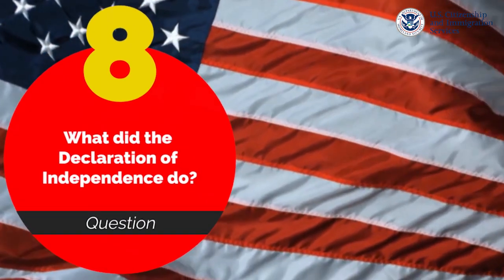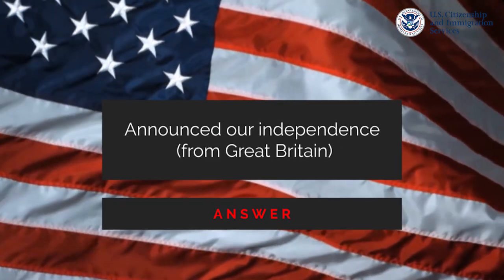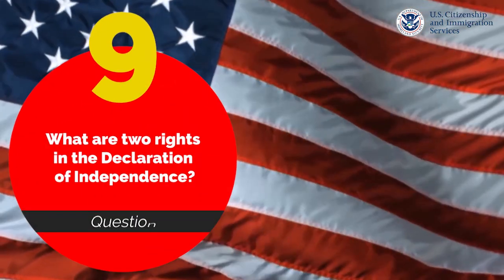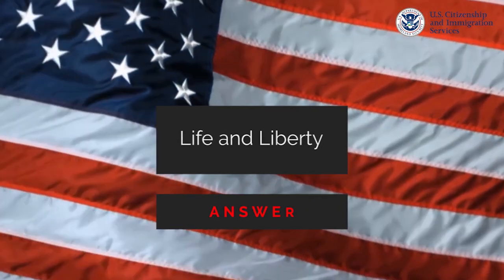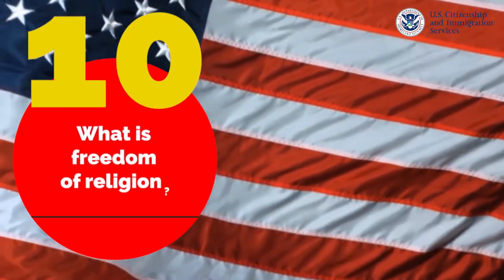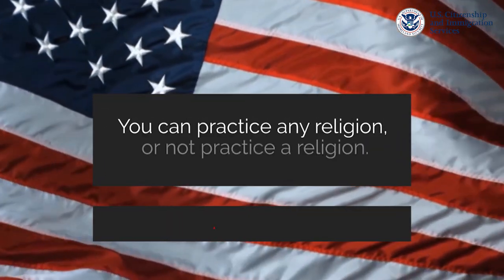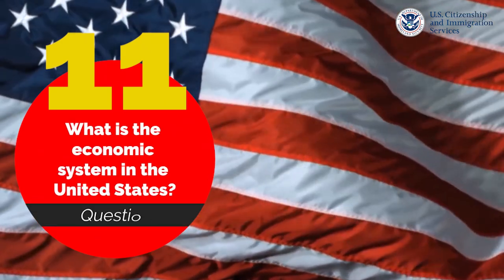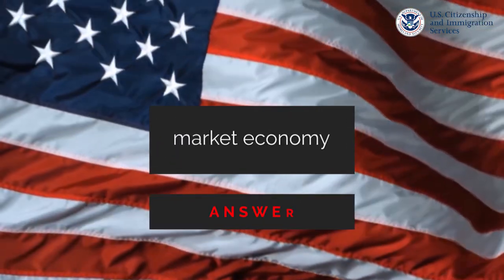What did the Declaration of Independence do? Announce our independence from Great Britain. What are two rights in the Declaration of Independence? Life and liberty. What is freedom of religion? You can practice any religion or not practice a religion. What is the economic system in the United States? Market economy.